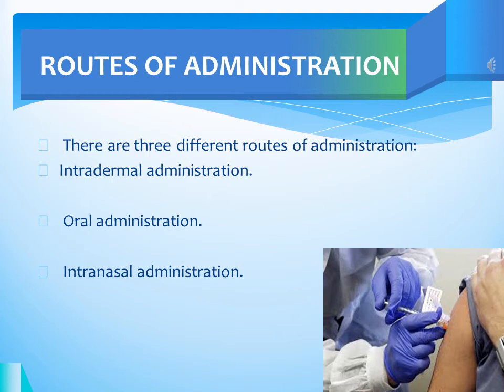In intradermal administration, vaccines are injected into the layers of the skin. The BCG vaccine — Bacillus Calmette–Guérin — is an example of this route. For oral administration, done by mouth, rotavirus and oral polio vaccines are examples. For intranasal administration, different types of flu vaccines can be administered through the nasal passage.